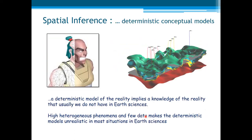For example, suppose a deterministic conceptual model of the reality that I want to model. I could use a deterministic model like the wireframe we use, for example, to model the head of this warrior. In this case, we are sure that the interpolated — smoothing, polynomial interpolation, whatever — is for sure accurate and precise, because we know in advance what we are going to model.